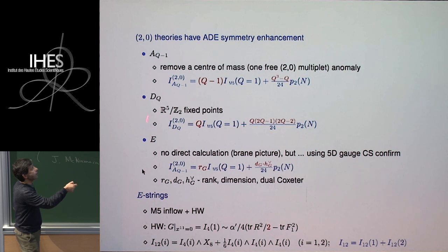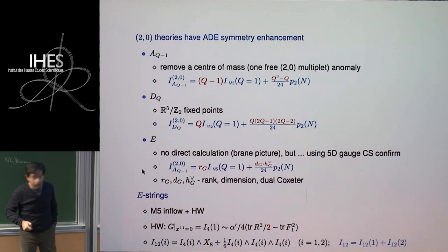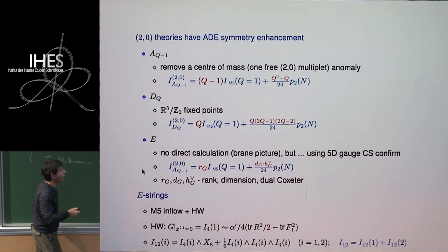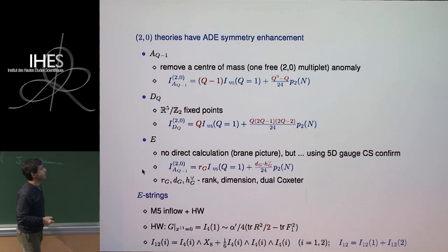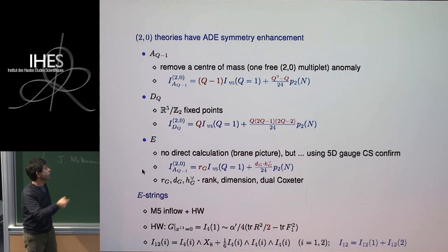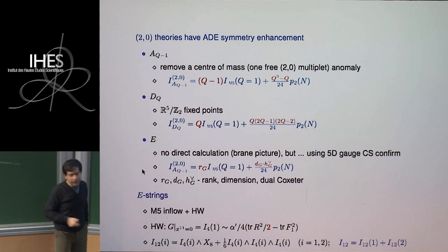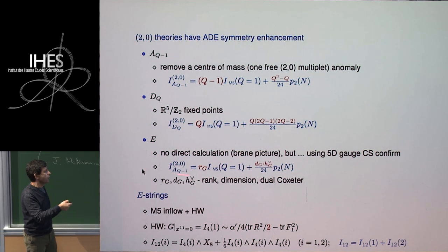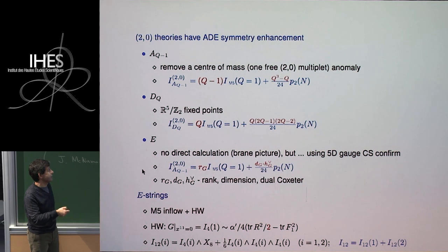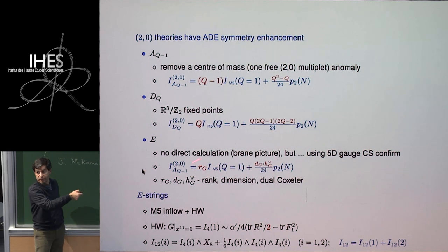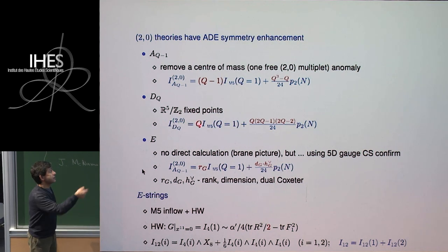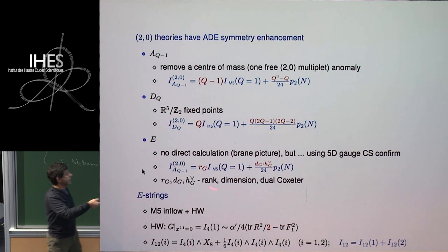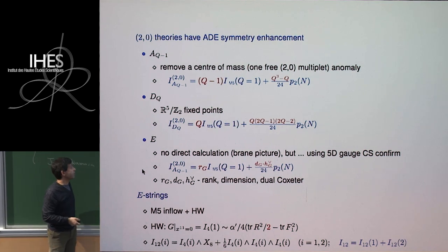Just simply requiring that M theory with the brains is not supposed to suffer from anomalies. Now, in order to talk about A series, you have to take away the center of mass, which you can do, and the change is very little. Then a calculation has been done by replacing R5 by R5 mod Z2, or by sphere by Rp4. It requires a bit of care, but you do get a formula for this series. For E series, we do not have a brain realization, not at least that I know, but by now there is also a proof using five-dimensional gauge assignments theories. And it does confirm that there is a general pattern, that the coefficients always look the same way. And since then, this is about 2-0 theory. Since then, the things have been extended to also different 1-0 theories.